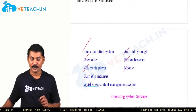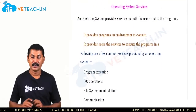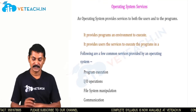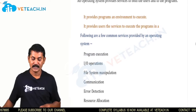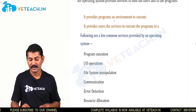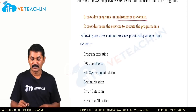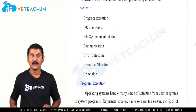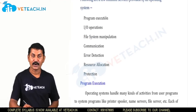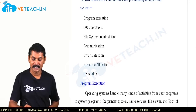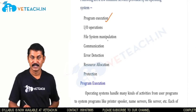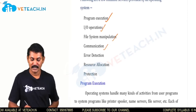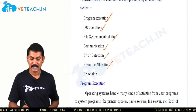The next important concept is: what are the services of an operating system? The operating system provides programs and an environment to execute. It provides users with services to execute programs. The most important services are: program execution, input-output operations, file system manipulation, communication, error detection, resource allocation, and protection.